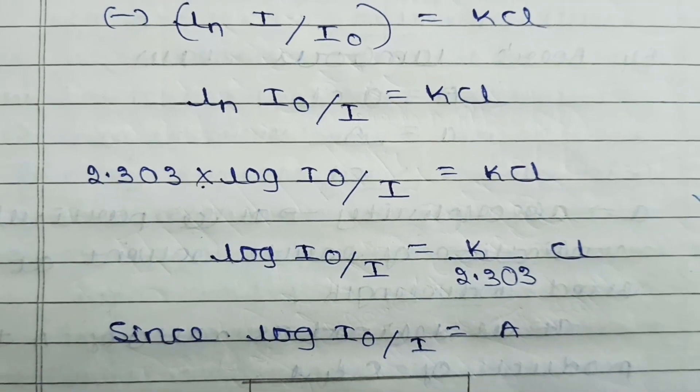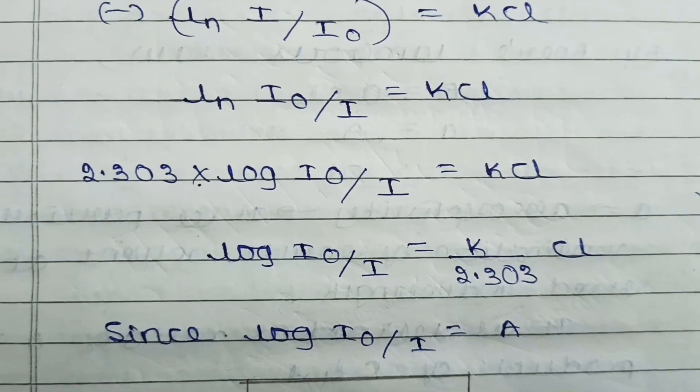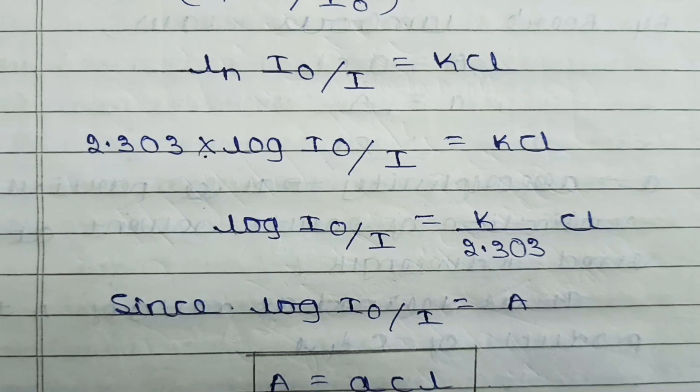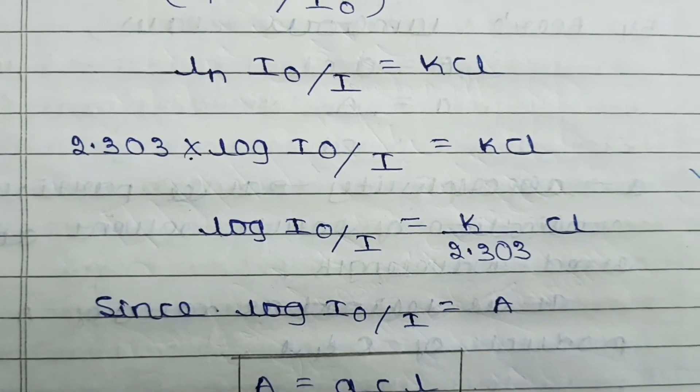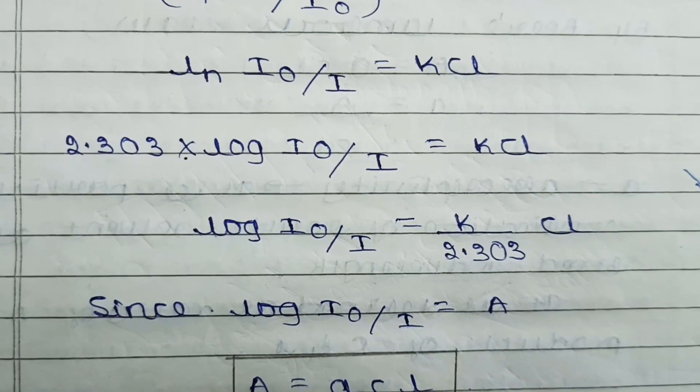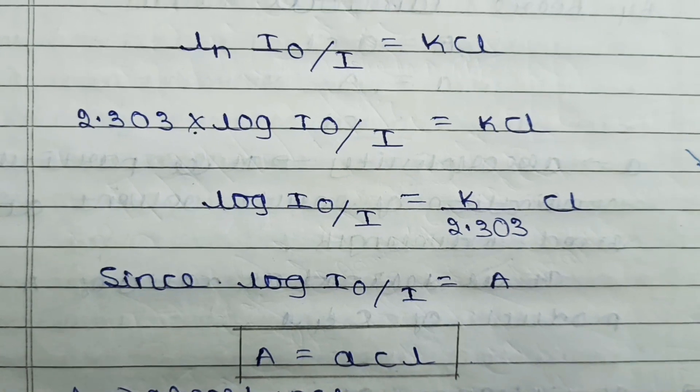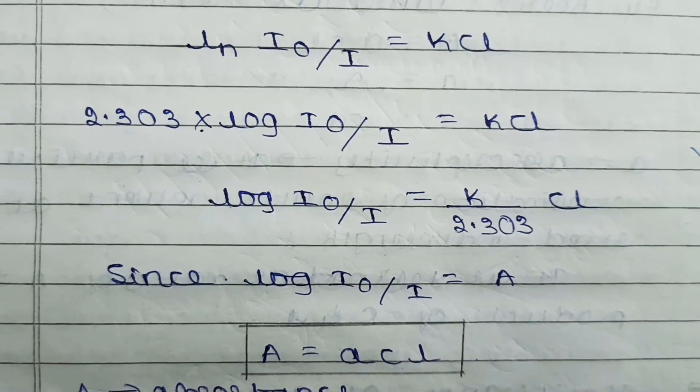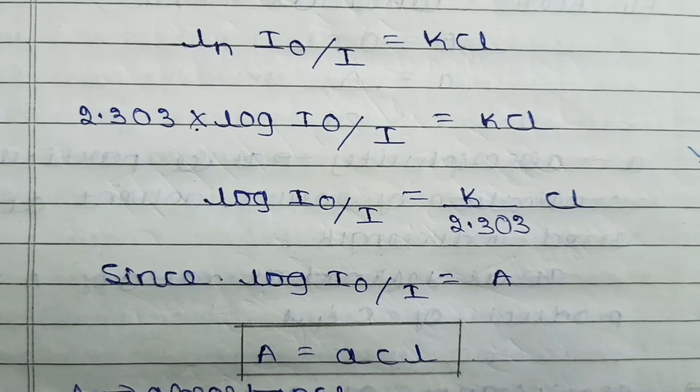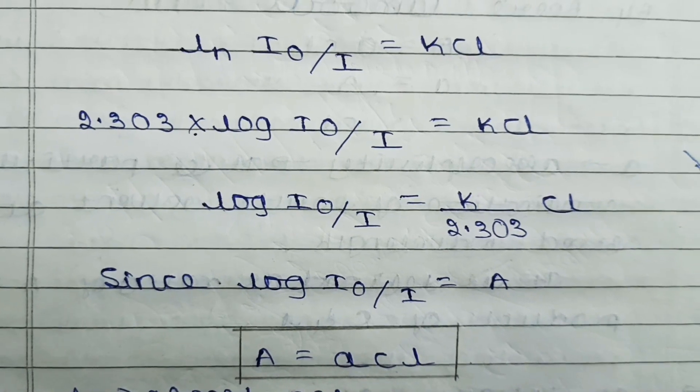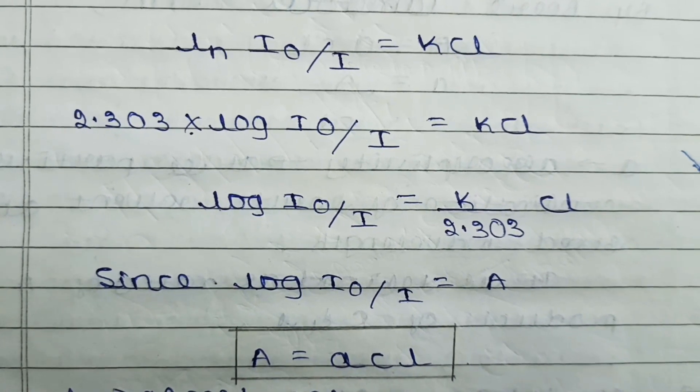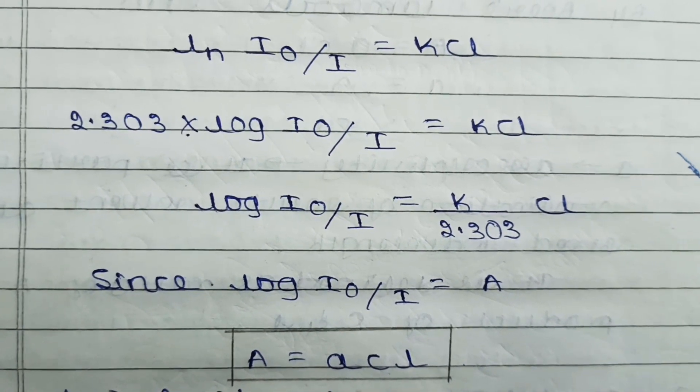Ln is converted into log. For conversion of Ln into log, we multiply by 2.303. So 2.303 times log I₀/I equals KCL. Rearranging the equation: log I₀/I equals K divided by 2.303 times CL.